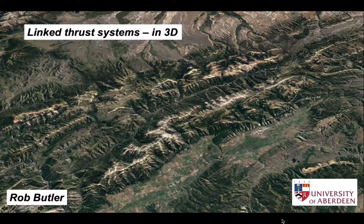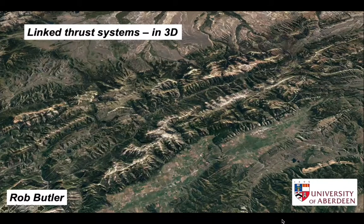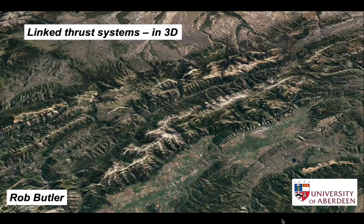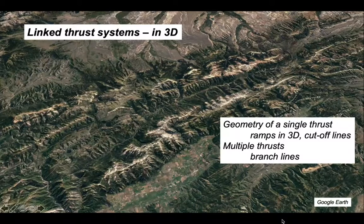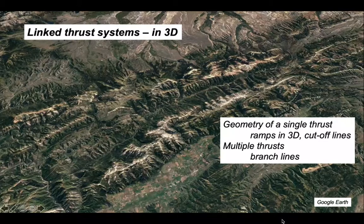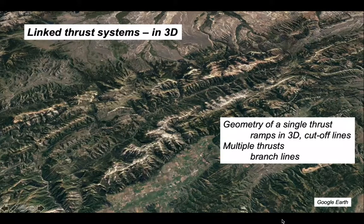It's common to represent the structure of thrust systems on individual cross sections, but actually thrust systems are complicated three-dimensional structures. We'll look at the complexity of a single thrust fault, examining its ramp geometries in three dimensions using concepts of cutoff lines, then move on to multiple thrusts and how these relate using branch lines.